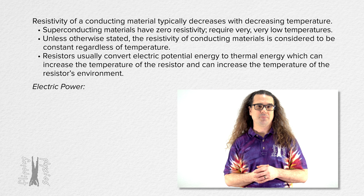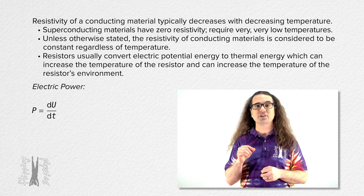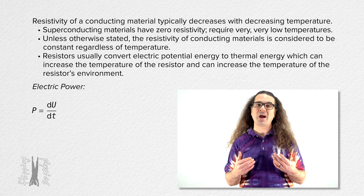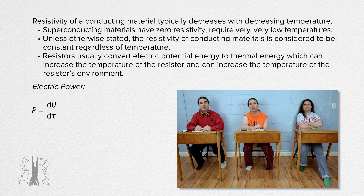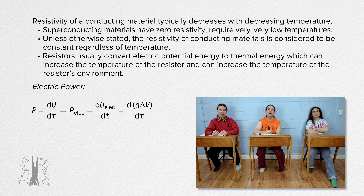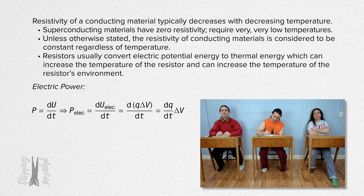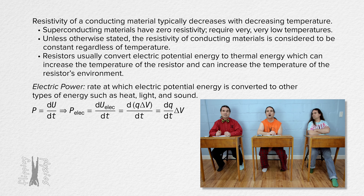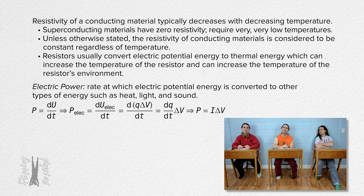Now let's talk about electric power. Power equals the derivative of potential energy with respect to time. Electric power equals the derivative of electric potential energy with respect to time. We know electric potential energy equals charge times electric potential difference. Assuming the electric potential difference is constant, electric power equals the derivative of charge with respect to time times electric potential difference. The derivative of charge with respect to time is electric current. So the rate at which a circuit element converts electric potential energy to heat, light, and sound equals the current through the circuit element multiplied by the electric potential difference across it.